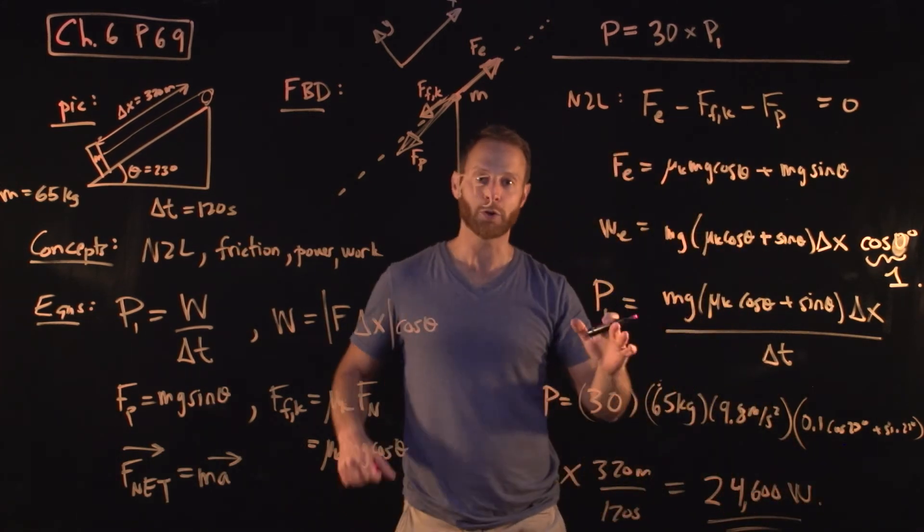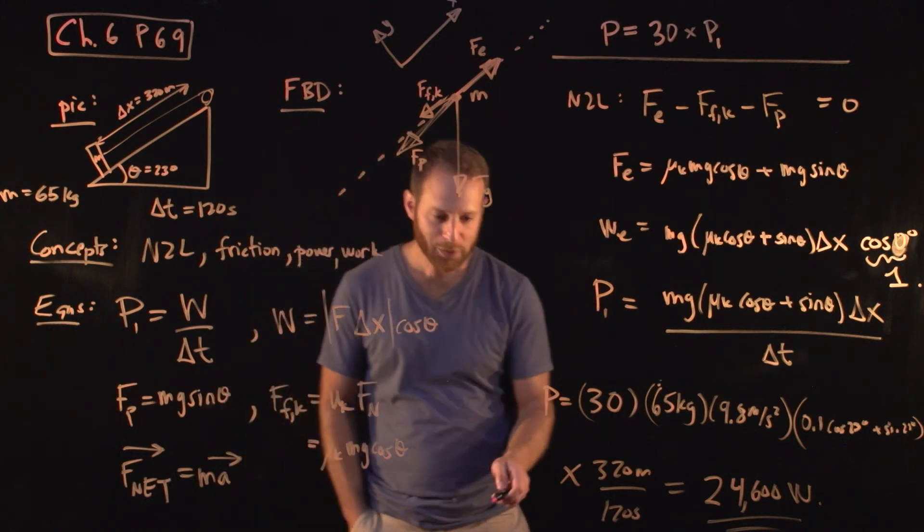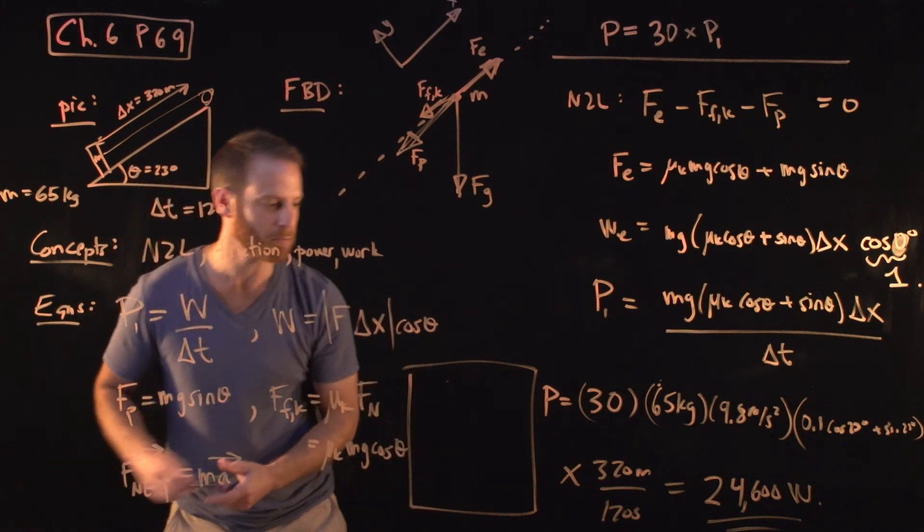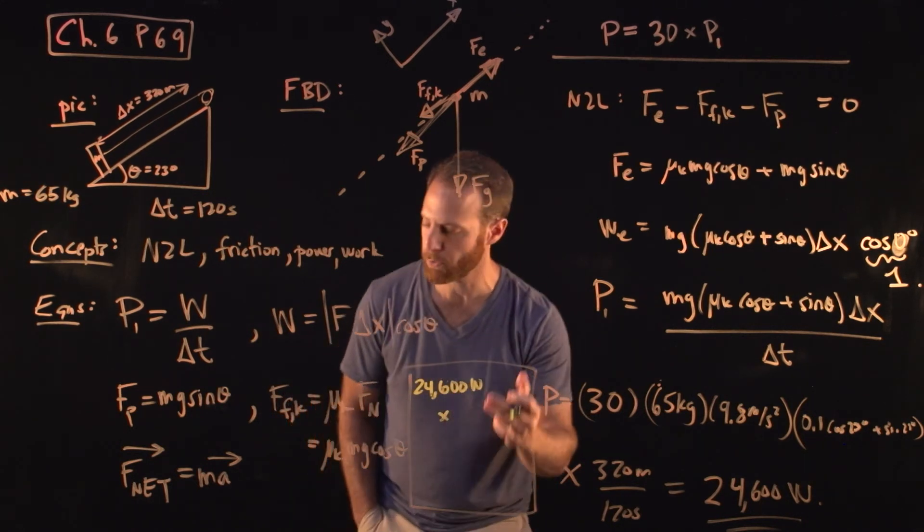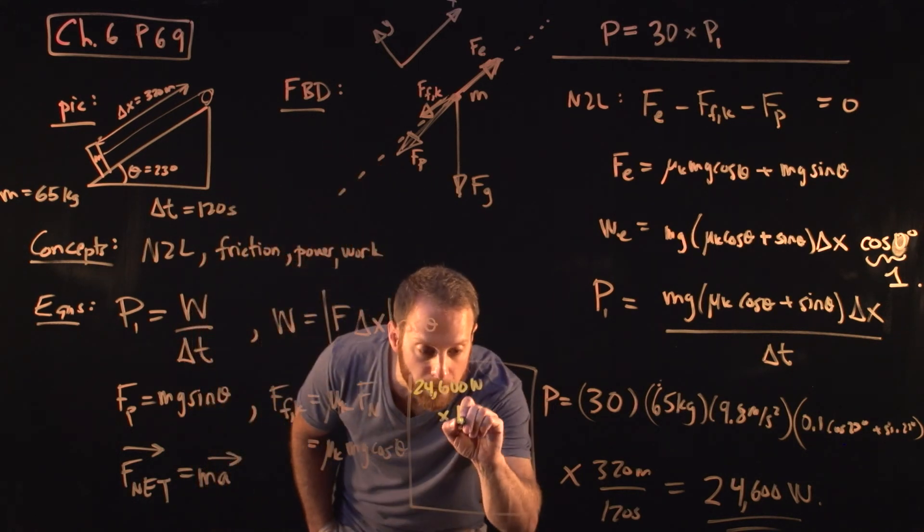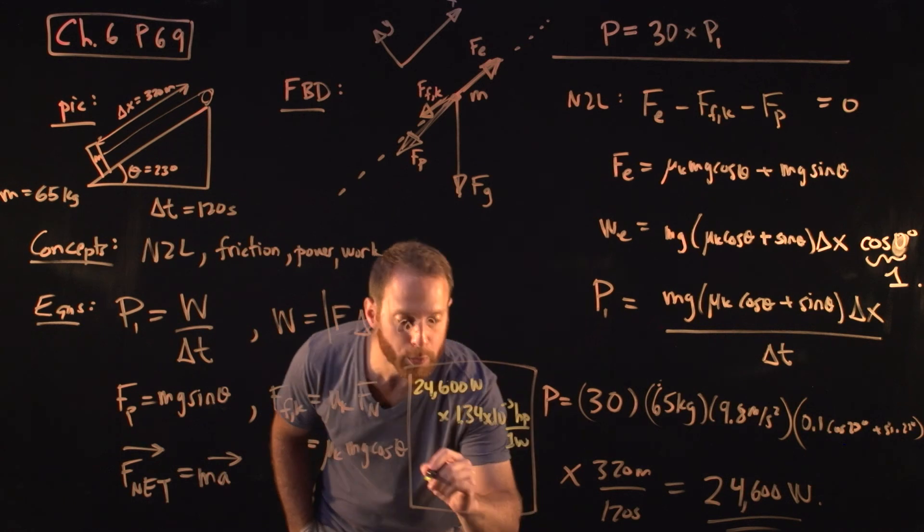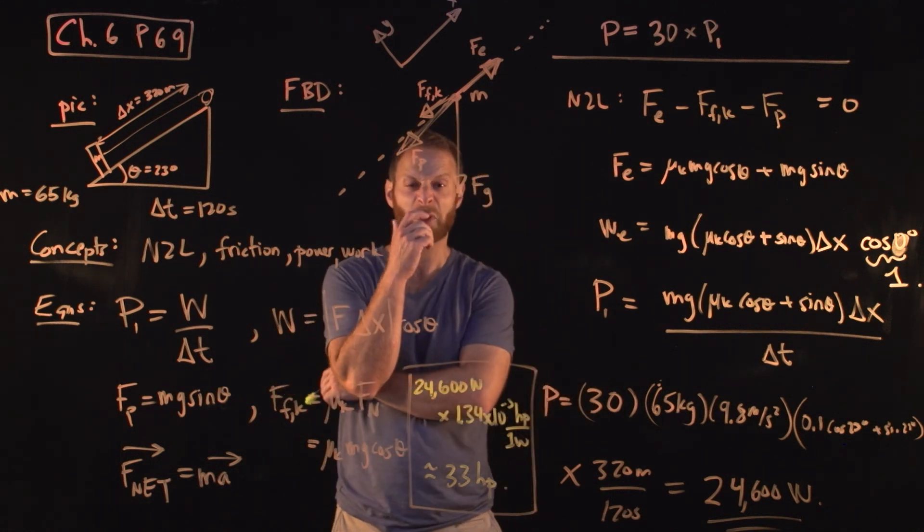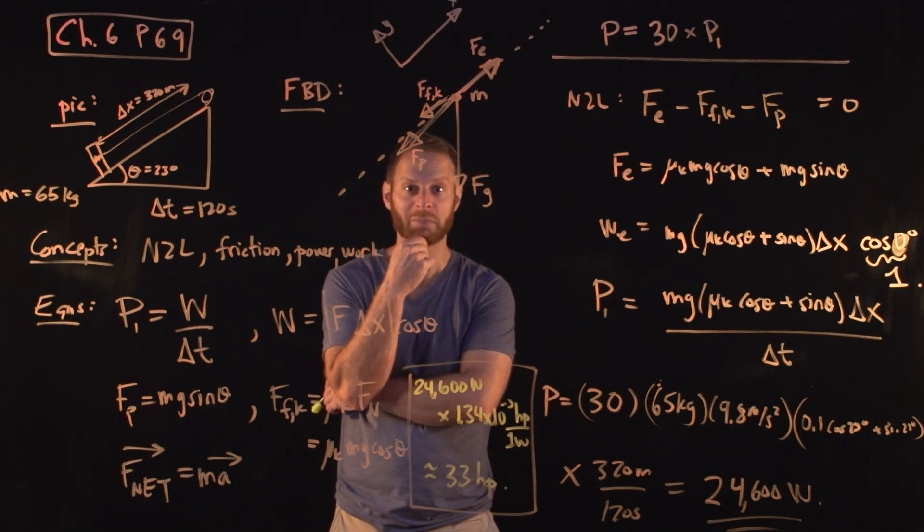So if you got that at some point, good, you did it correctly. But the last thing to do is the book asks us to convert this to horsepower. 24,600 watts. The conversion factor, 1.34 times 10 to the minus 3 horsepower for every 1 watt. So when you put this together, this is approximately 33 horsepower. And for me, when I stop and think about it, does that make sense? Does 33 horses pulling 30 people up a hill in two minutes make sense? I guess so. So, there you go.